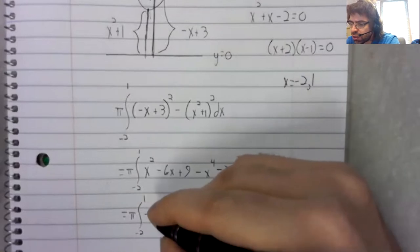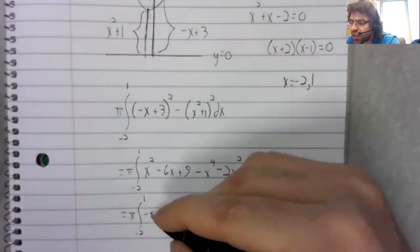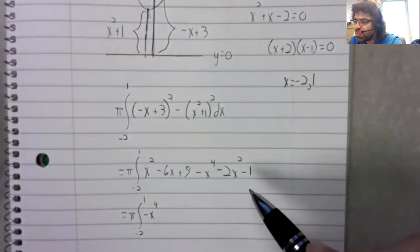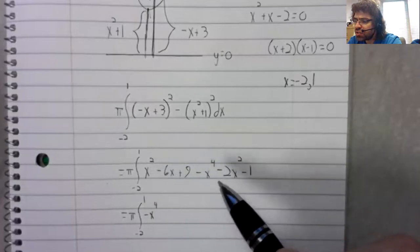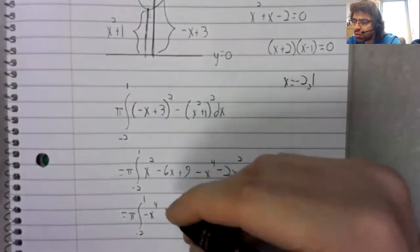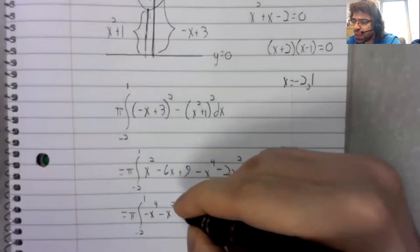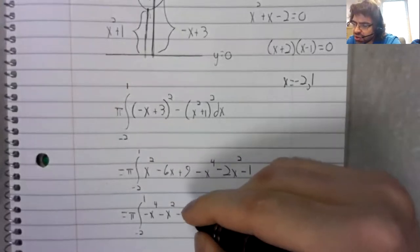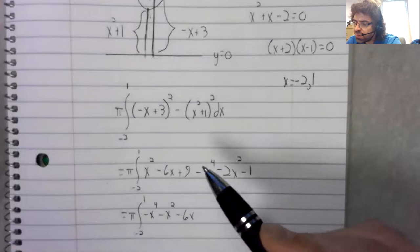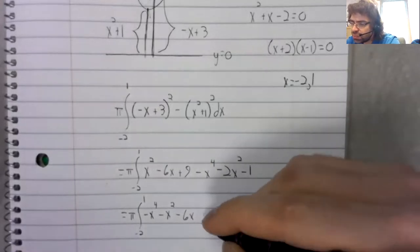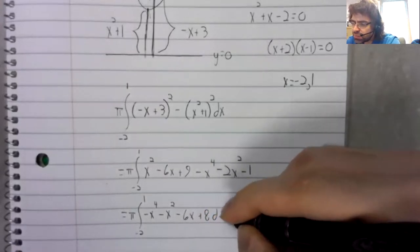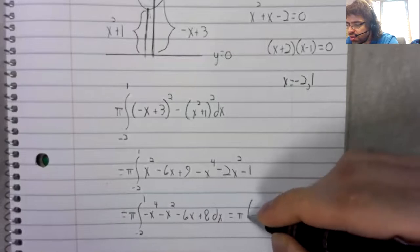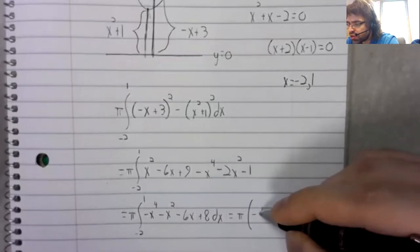And where are we at? We've got a negative x to the fourth. We don't have any x cubed terms. We've got these x squared terms, giving us negative x squared. We've got negative 6x, 9 minus 1, 8. And now it's all over but the shouting.